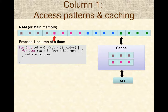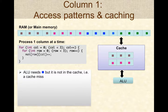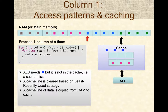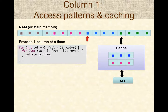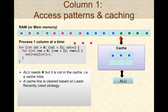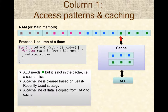For the third row, first column: the ALU needs the data block, but it's not in cache, and now the cache line is full — so data is first copied back to memory, then the necessary block is fetched from memory into cache, and the ALU accesses it. For the fourth row, first column: again not in cache, cache is full, so data is cleared back to memory, a new block is fetched from RAM, and the ALU uses it.